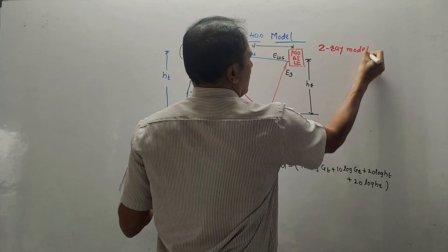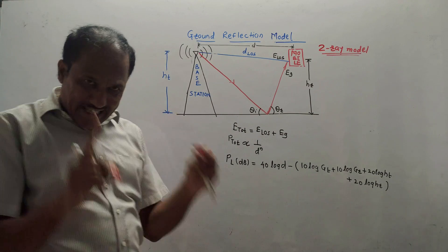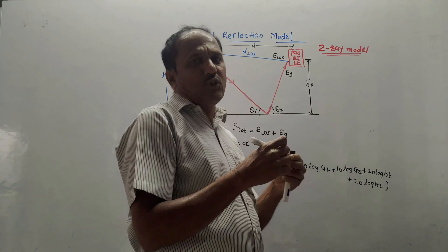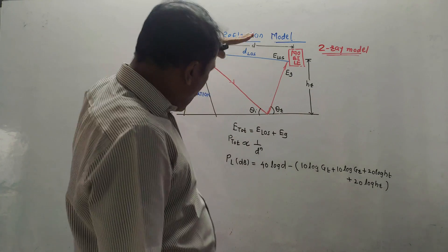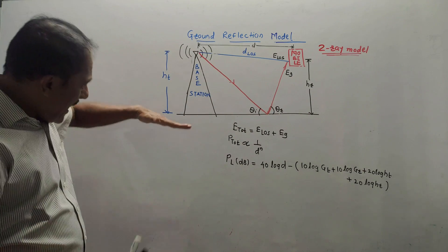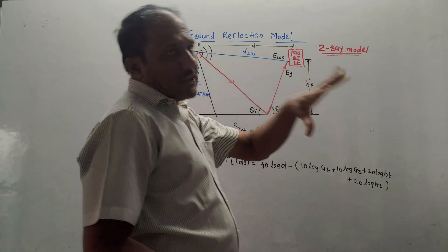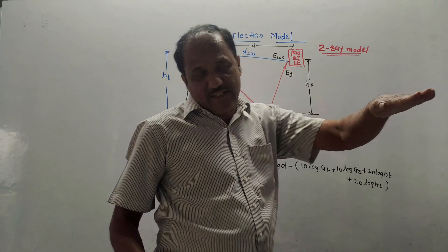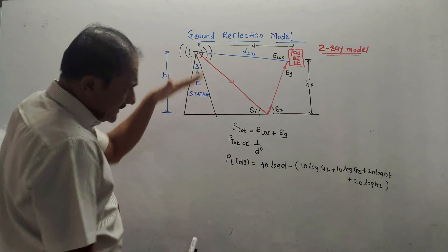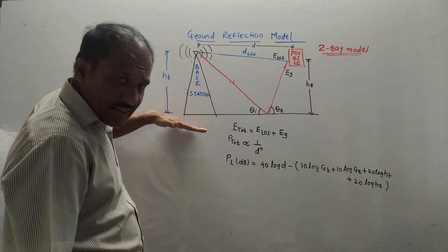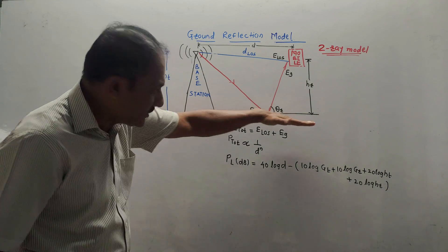In this model, mainly two types of rays, two types of waves are used — so this is also called the Two-Ray Model. The basic concept involves a ground surface. The surface of the earth is not flat; it has some curvature. For simplicity, in this model, it is assumed that the surface of earth is flat, shown by a horizontal line.